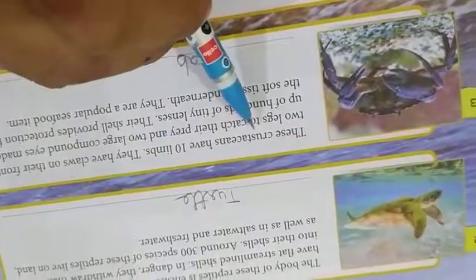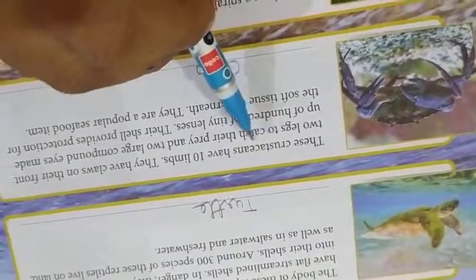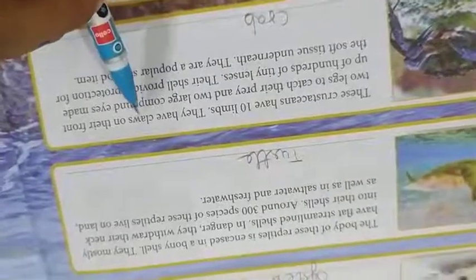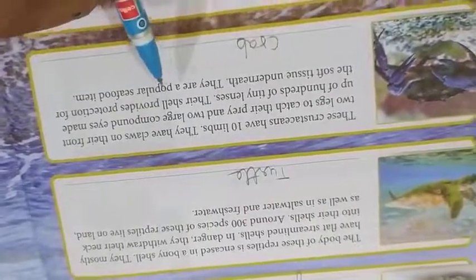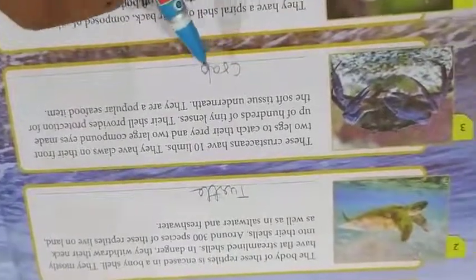Third, these crustaceans have 10 limbs. They have claws on the front two legs to catch their prey and two large compound eyes made up of hundreds of tiny lenses. The shell provides protection for the soft tissue underneath. They are a popular seafood item. It is crab.